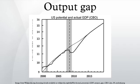The percent output gap equals a constant c multiplied by percent cyclical unemployment. This can also be expressed using variables where Y is actual output, Y* is potential output, U is actual unemployment, U* is the natural rate of unemployment, and c is a constant derived from regression to show the link between deviations from natural output and natural unemployment.